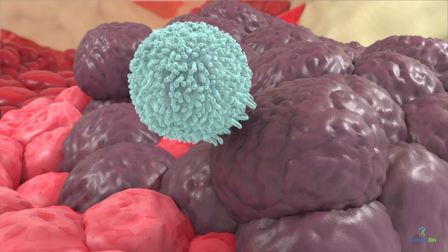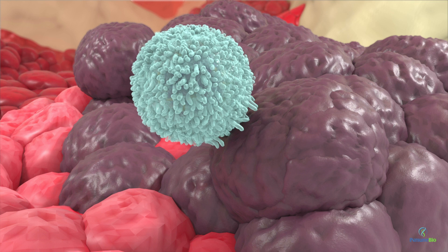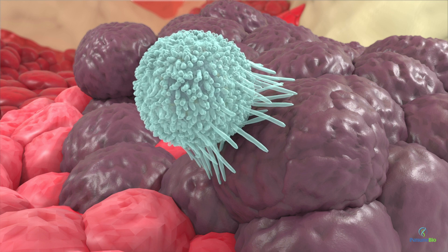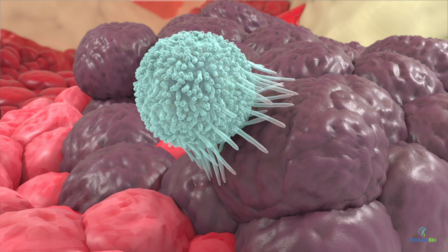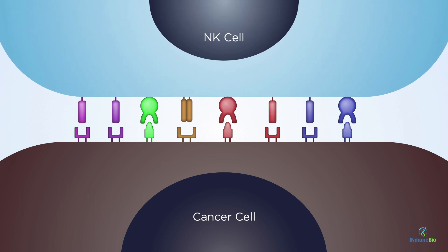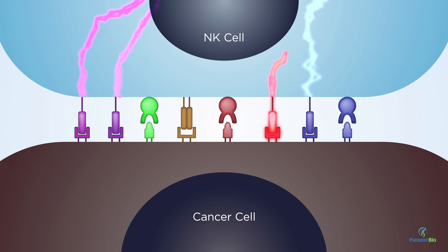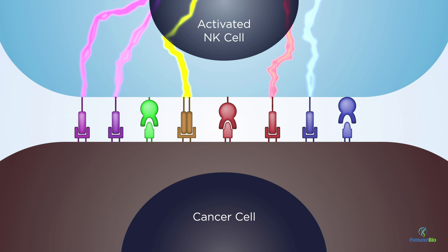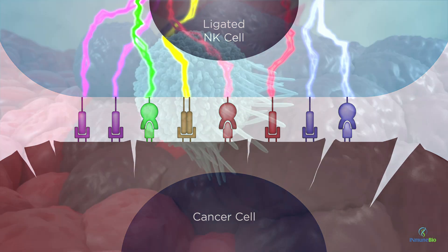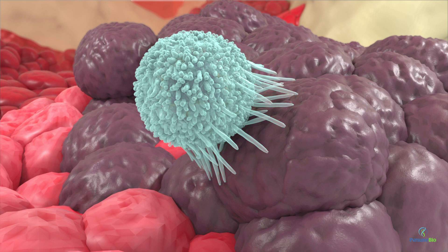As resting NK cells circulate, their activation is controlled by a multi-step process requiring binding of signalling molecules on their surface by molecules expressed on tumour cells. When NK cells bind to cancer cells, they form a tight bond called an immune synapse, where tumour ligands attach to their specific NK cell receptors and initiate a cascade of signals. This moves the NK cells from a resting state to the point where they can kill the cancer cell.